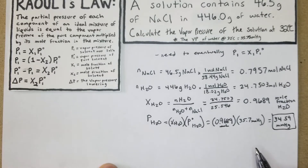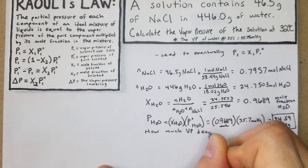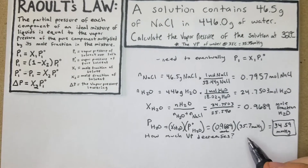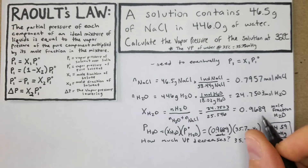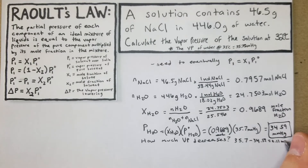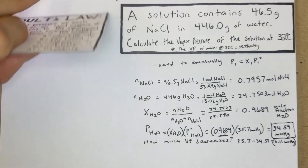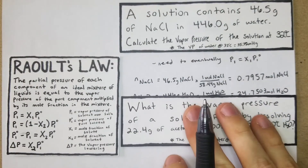Another thing that can be asked is how much the vapor pressure decreases. To find that, we just subtract: 35.7 − 34.59 = 1.11 mmHg. That is the vapor pressure lowering. Watch out — you might think you're at the last step when you're not; there's still this simple subtraction remaining.